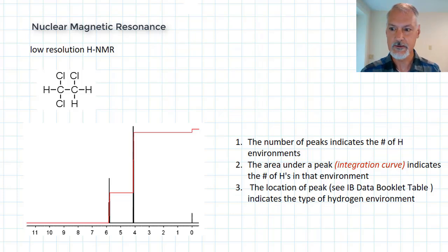HNMR, nuclear magnetic resonance. Here I have a molecule of 1,1,2-trichloroethane. We can look at this and see that there's essentially two different hydrogen environments.